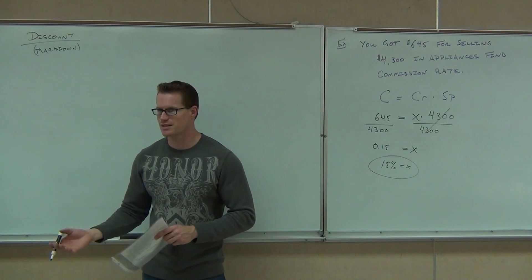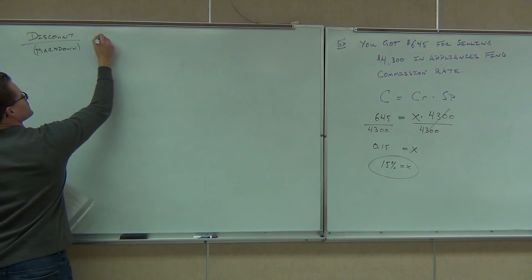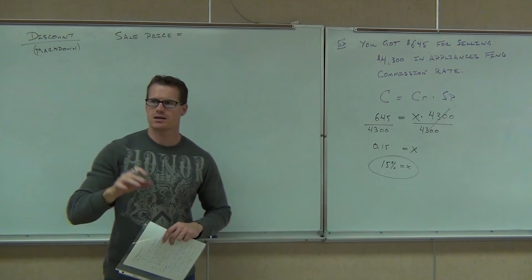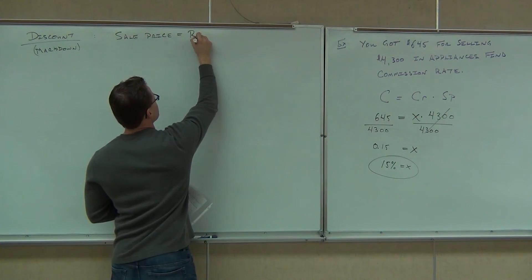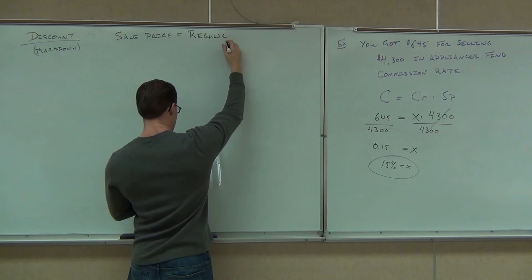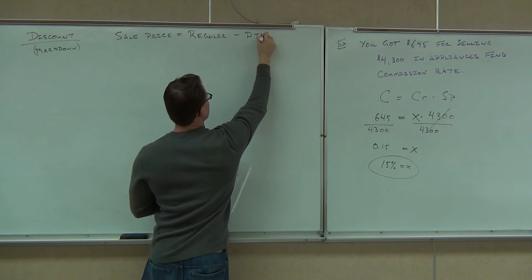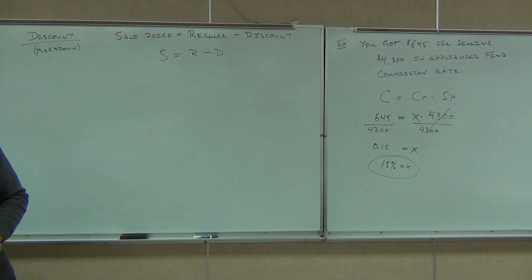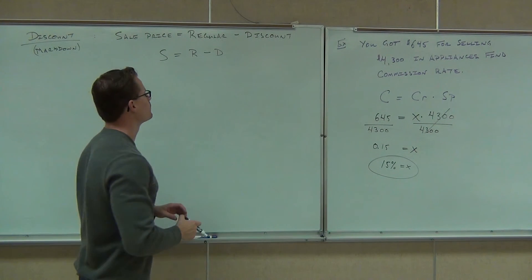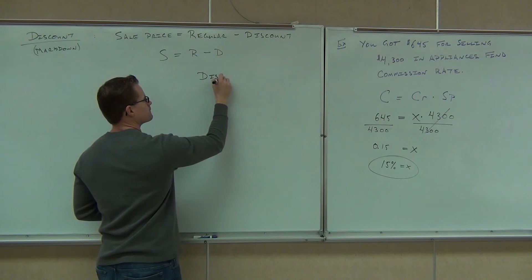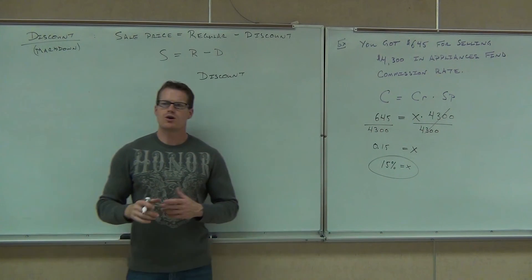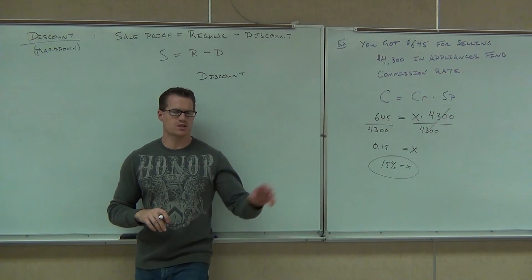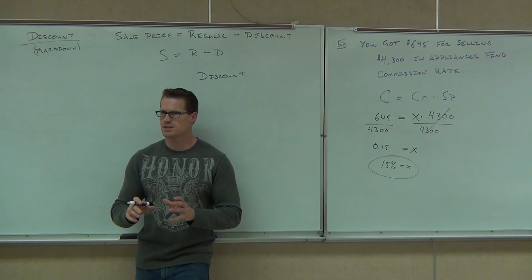You go to Kohl's, you're always getting some sort of a discount. Here's how discount works. They typically take the sale price and find it by taking the regular price and subtracting some discount. In other words, sale price equals regular price minus discount. But now think about this. When you go into a store, do they just say $5 off everything? No. They usually say like 20% off this, 40% off this, 70% off this, 10% off this. So it's all based on a different discount rate.